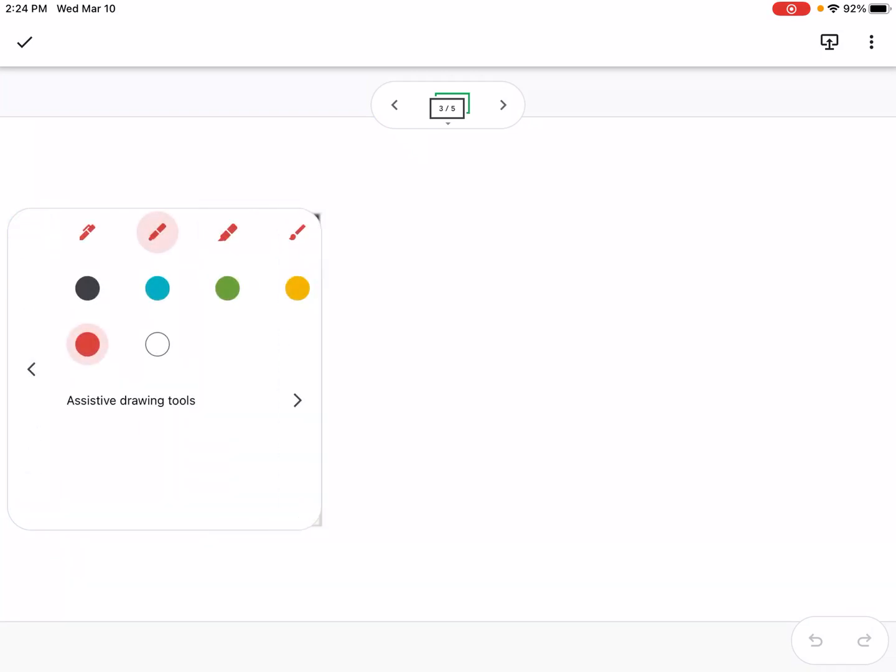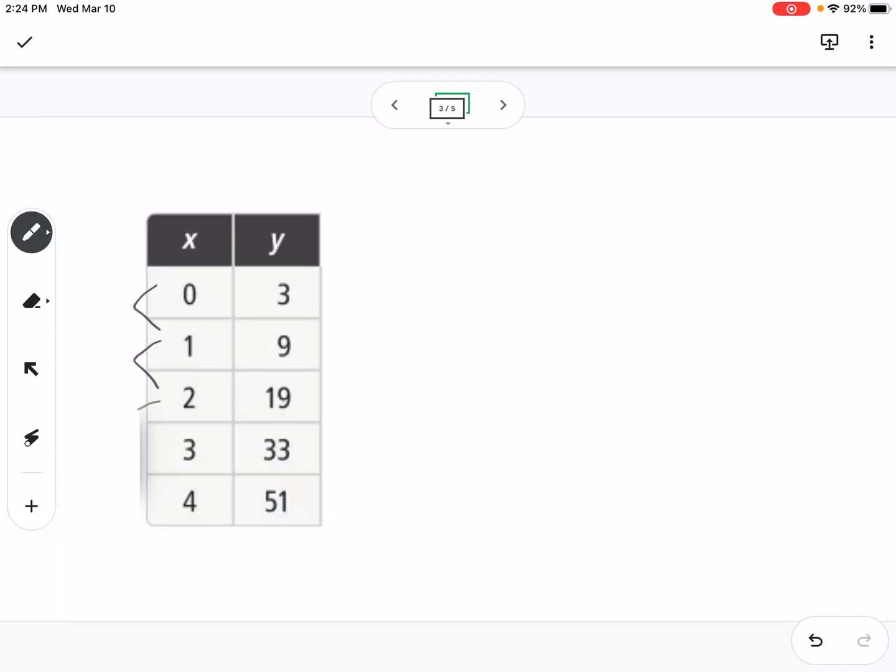So we're going to do the same thing here. Notice I make sure the x's are all increasing by the same number, so we can compare the y's. So let's look for the first differences. So 3 plus 6 gives me 9, 9 plus 10 gives me 19, 19 plus 14 gives me 33, and 33 plus 18 gives me 51. So we can see that those first differences are not constant like they were on the last example. So that means this is not linear.